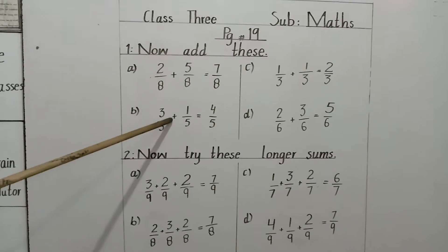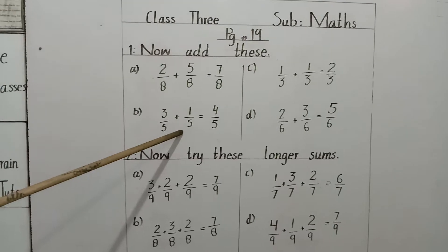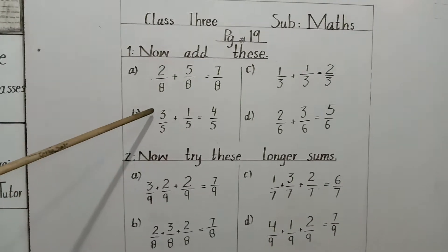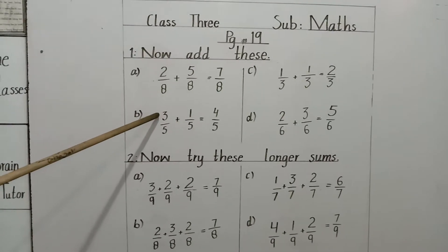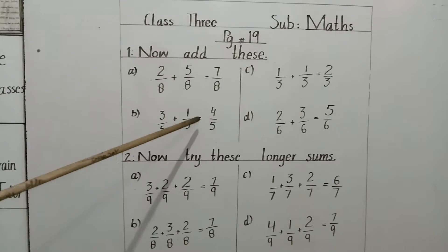Next, 3 by 5 plus 1 by 5. Here denominators are same, so we will write 5. In the answer, 5 comes and numerators are different. So we will add numerators only. 3 plus 1 equals 4. 4 by 5. The answer is 4 by 5.